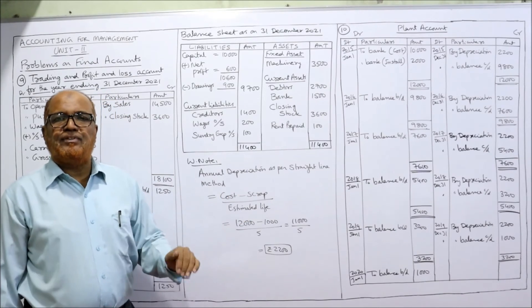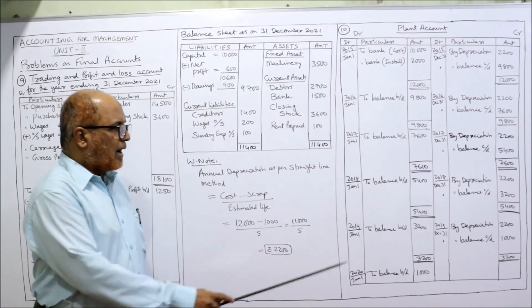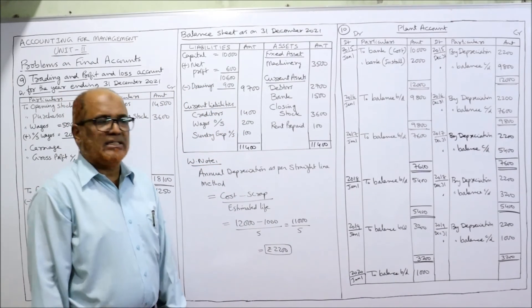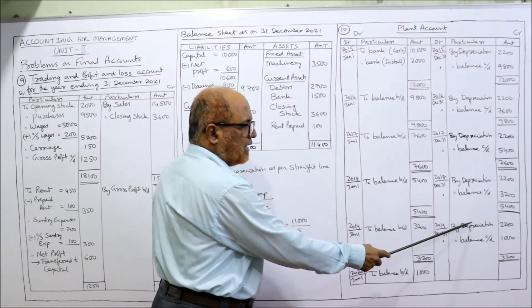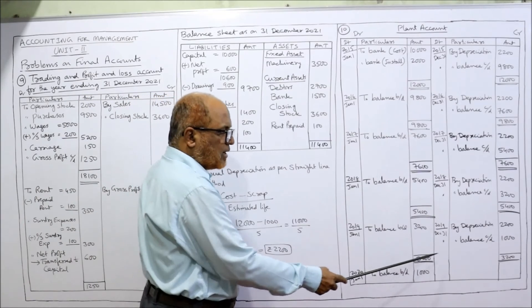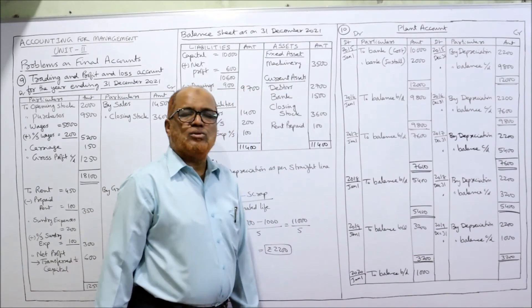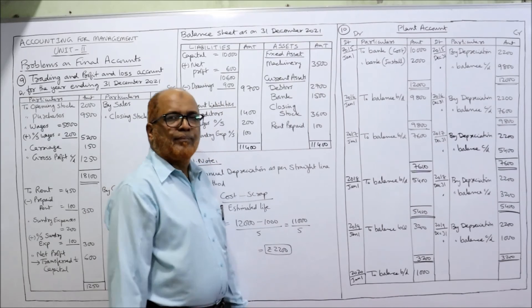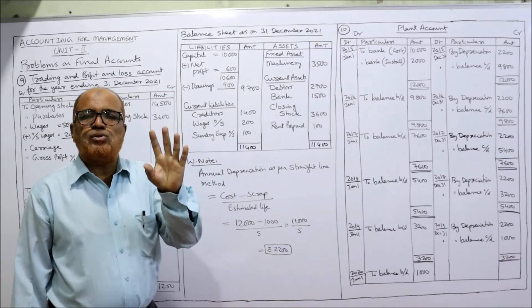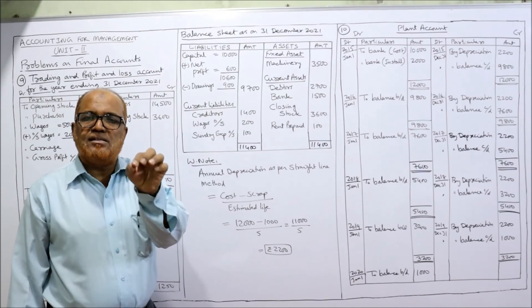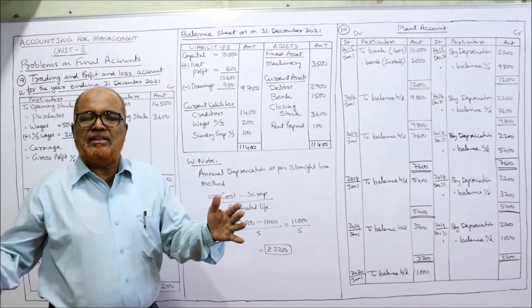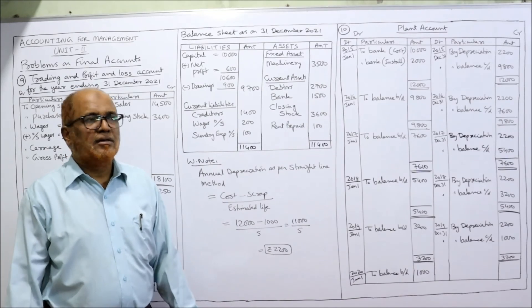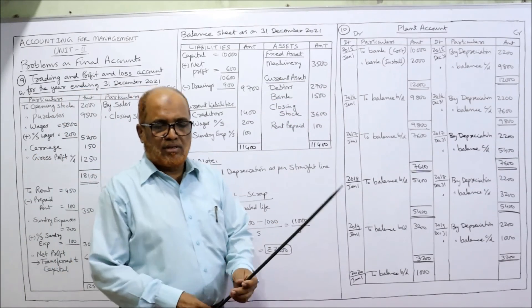Now we come to the fifth year — 2019. Balance brought down: 3,200. At 31st December 2019, depreciation 2,200 is provided. Balancing figure: 3,200 minus 2,200 = 1,000, carried down. In 2020, five years are completed — the estimated life is over. The residual value of the plant is 1,000, which is the scrap value. The business will sell the plant and realize 1,000 rupees. This completes the plant account for five years.